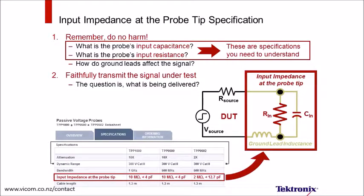A probe's data sheet shows an input impedance specification made up of input resistance and input capacitance. Usually, the loading of greatest concern is caused by the capacitance at the probe tip, because as the measured signal's frequency increases, the capacitive reactance decreases, causing more probe loading.